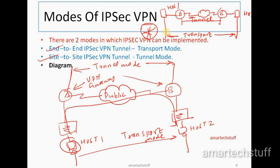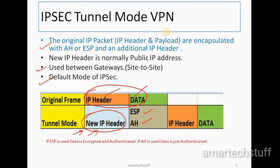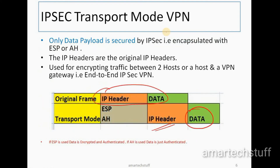To summarize: tunnel mode is the default mode — if you are implementing IPSec VPN, by default you are implementing it in tunnel mode. Regarding the protocols, you must use either ESP or AH. If using ESP, your data is both encrypted and authenticated. If using AH, your data is only authenticated — no encryption — making AH less secure compared to ESP.